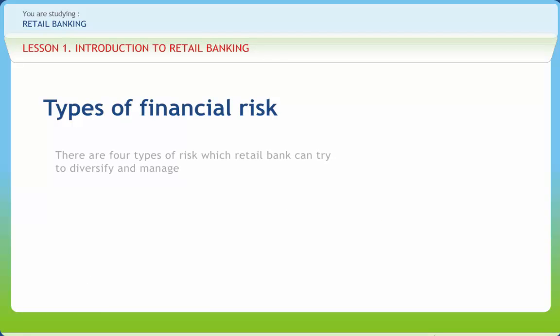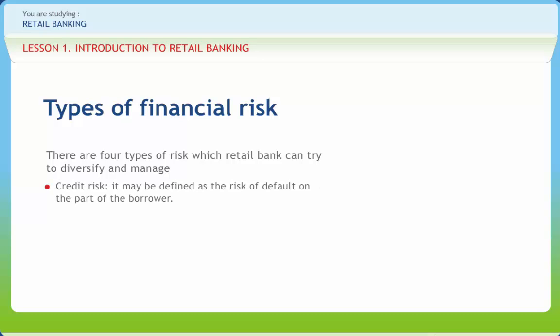There are four types of risk which retail banks can try to diversify and manage. Credit risk may be defined as the risk of default on the part of the borrower. The lender always faces the risk of the counterparty not repaying the loan or not making the due payment in time. This uncertainty of repayment by the borrower is also known as default risk.